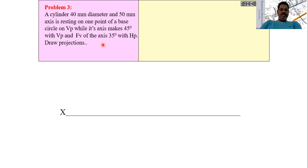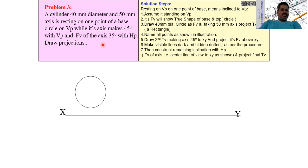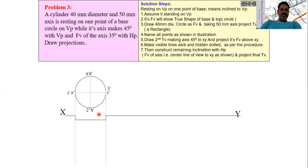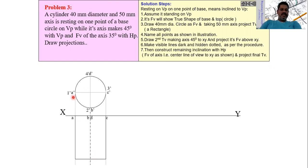Start the drawing by drawing an XY line first, then draw the front view as a circle, since the base is lying on the vertical plane. Draw the top view as a rectangle. Divide the circle into equal divisions, then project all the divided points downwards. The bottom circle points are 1, 2, 3, 4 and the top circle of the cylinder is a, b, c, d.